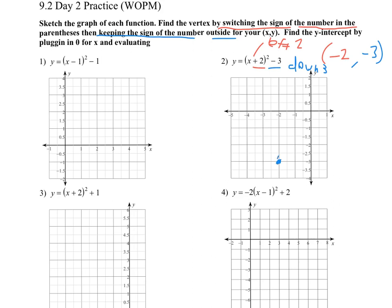We'll go ahead and graph it — put the vertex right there. You can draw your axis of symmetry, just a vertical line through the vertex. The y-intercept is a little more difficult to find. For the y-intercept, we plug in 0 for x and evaluate: 0 plus 2 squared minus 3. Follow PEMDAS — do the parentheses first, then the exponent, then the subtraction. The y-intercept is going to be at positive 1.